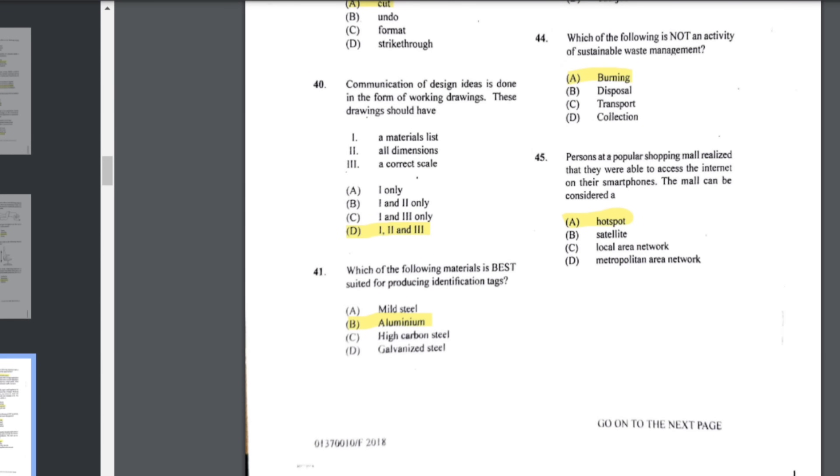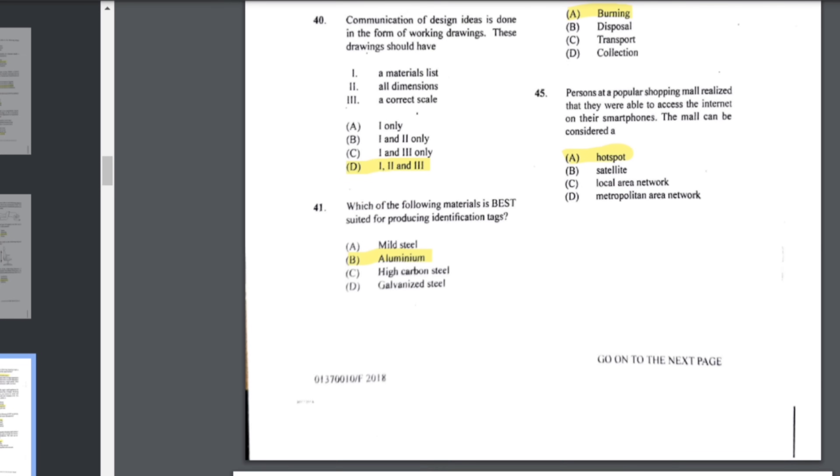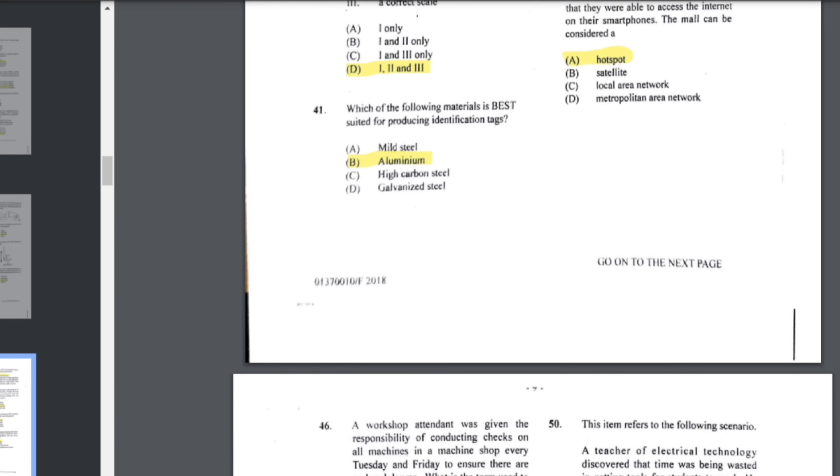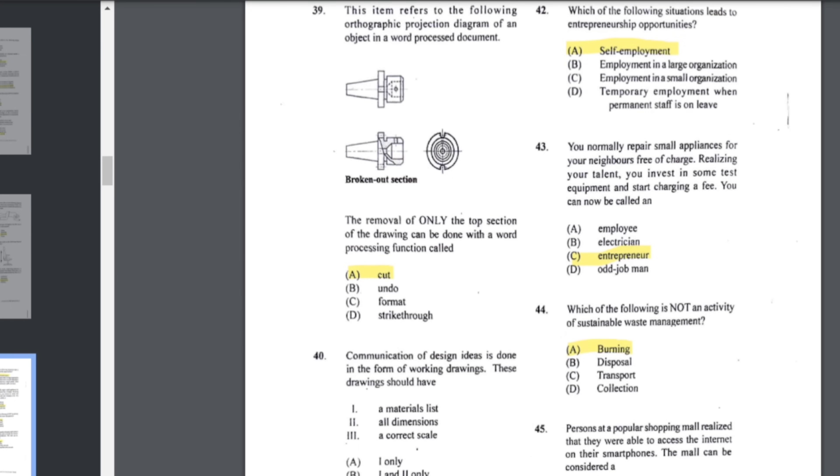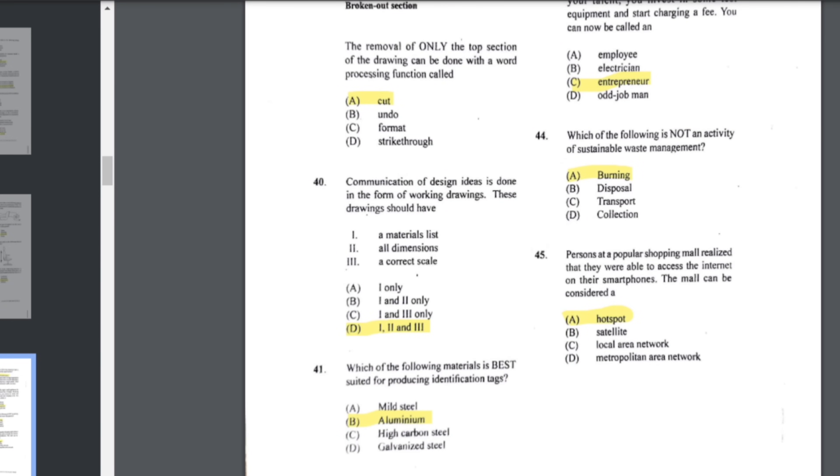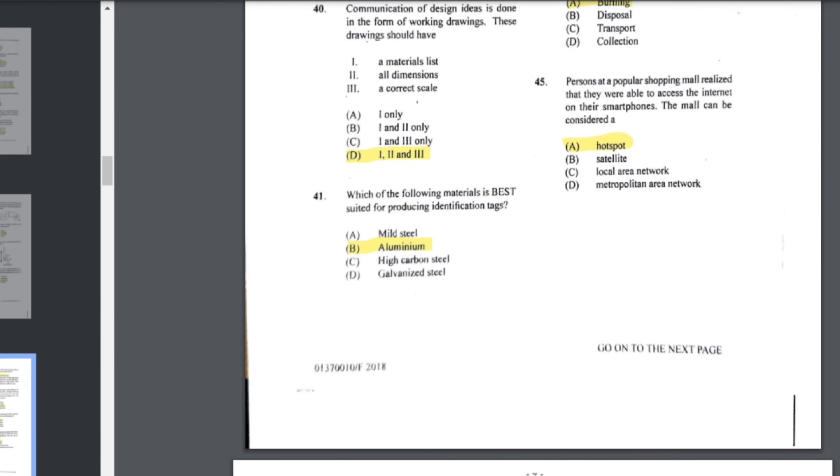Number 39: this item refers to the following orthographic projection diagram of an object. In a word processed document, the removal of only the top section of the drawing can be done with a word processing function called cut. Number 40: communication of design ideas is done in the form of working drawings. These drawings should include a materials list, dimensions, and a scale - all of the above. Number 41: which of the following materials is best suited for producing identification badges? That would be aluminum because it is light and also easy to work with. Number 42: which of the following situations lead to entrepreneurship opportunities? You normally repair small appliances for your neighbors free of charge. Realizing your talent, you invest in some test equipment and start charging a fee. You can now be called an entrepreneur.